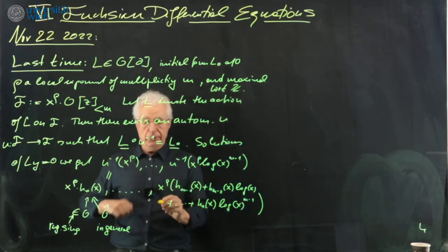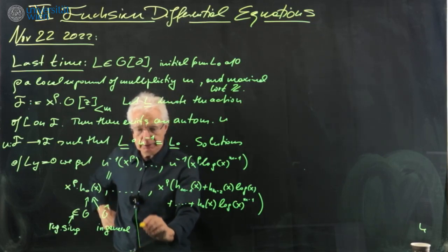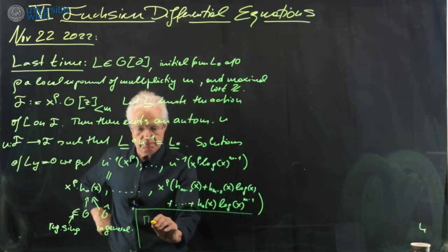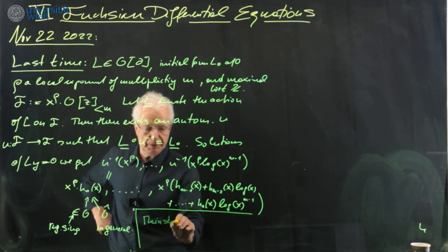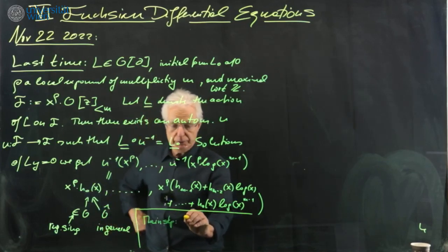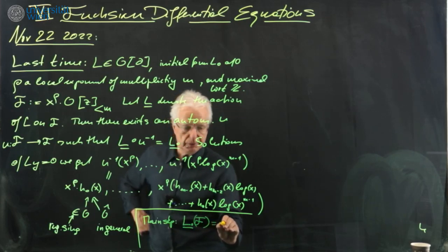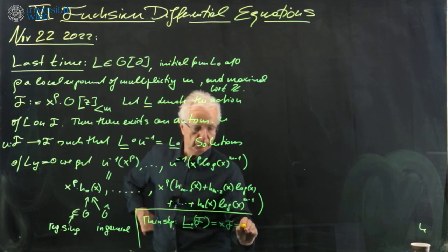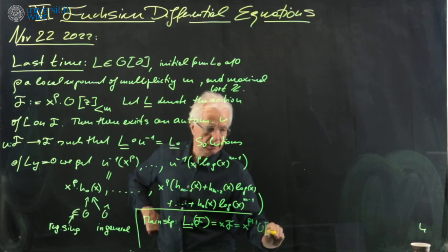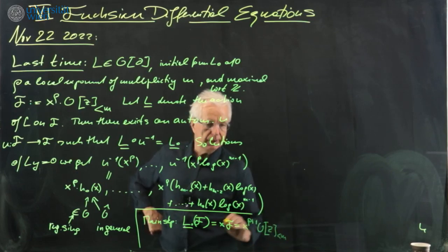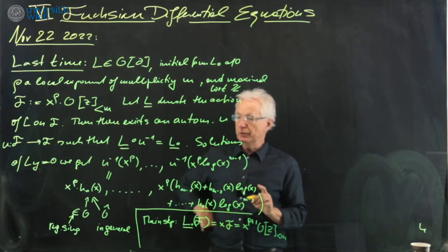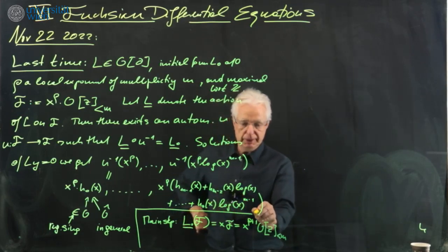The main trick, or main step, even though it looks very simple, is to show that L0, when you apply it to this F, gives x times F — that is, x^{ρ+1} times O[z], degree less than M. You have seen this because we did it several times.